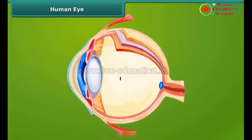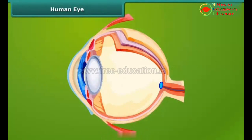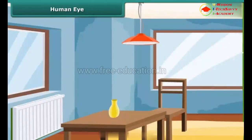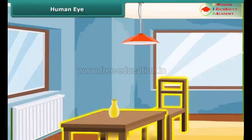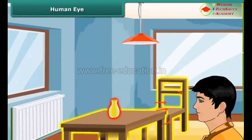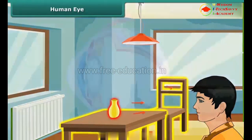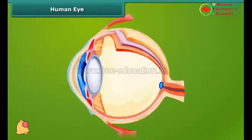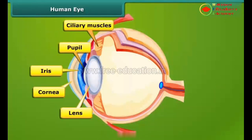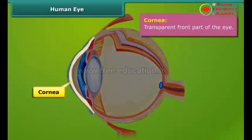The eye is nearly spherical in shape with a diameter of about 2.3 centimeters. We are able to see the objects around us only when the light emitted or reflected from them enters our eyes. It sends the signals of the image to our brain via optic nerves. Let us study the eye's structure in detail.